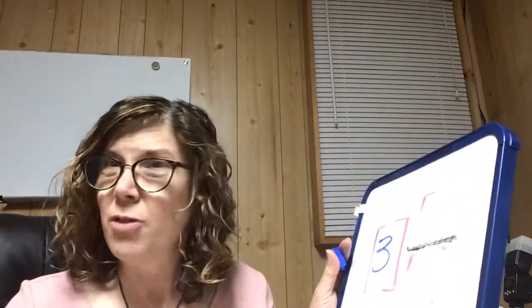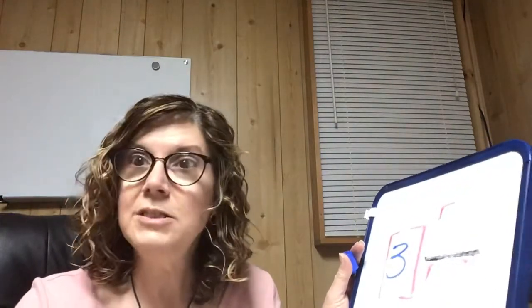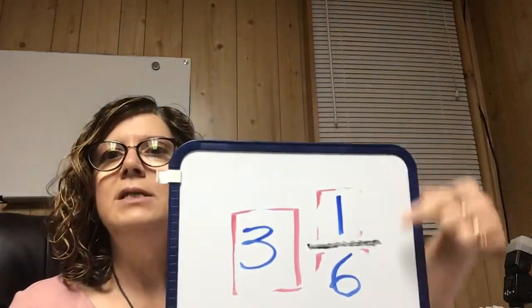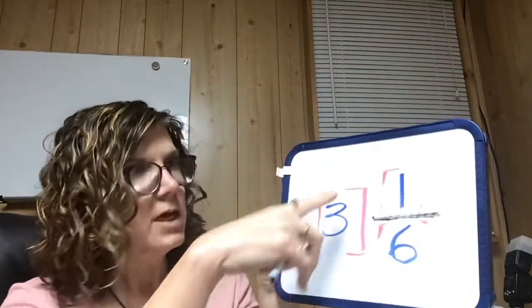Number two has rectangles divided into six pieces. The first, second, and third rectangles all have all six pieces colored, so the whole number is three. The fourth rectangle has six pieces as the denominator, but only one is colored yellow. So the mixed number is three and one-sixth.